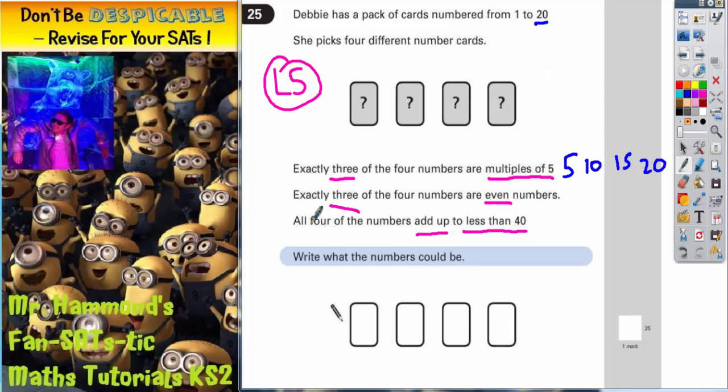The next clue says exactly 3 of the 4 numbers are even. Well, let's think about this. We've got to pick 3 of these 4. If we pick the first 3 and go for 5, 10, 15, then it's going to be impossible to have 3 of them being even. Because even if I put an even number at the end here, so for example 2, that means I've only got 10 and 2 which is even. So I've only got 2 even numbers. So I can't have 5, 10 and 15.